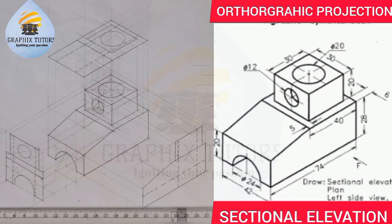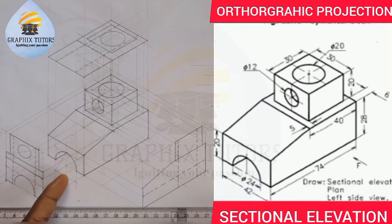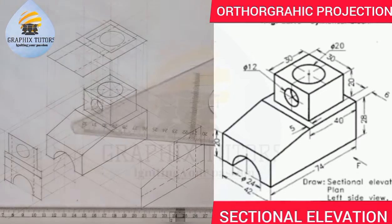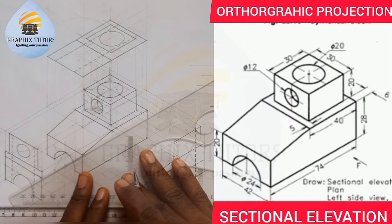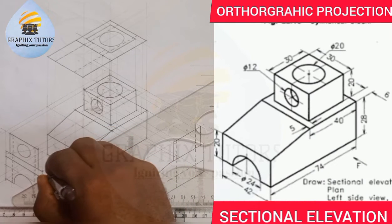Now let's get started. When we say we want to section this view, we want to draw the sectional front elevation looking at it from this side, meaning we're going to split this into half by placing my cutting plane in this direction. So if I split this in this manner, this is my cutting plane here.